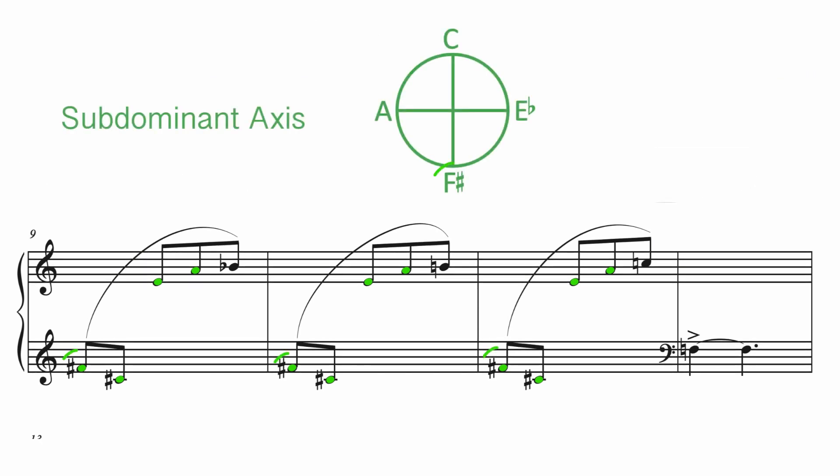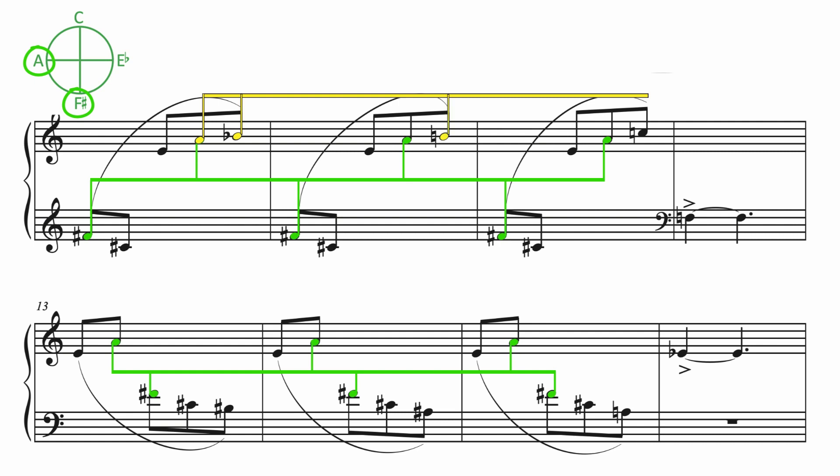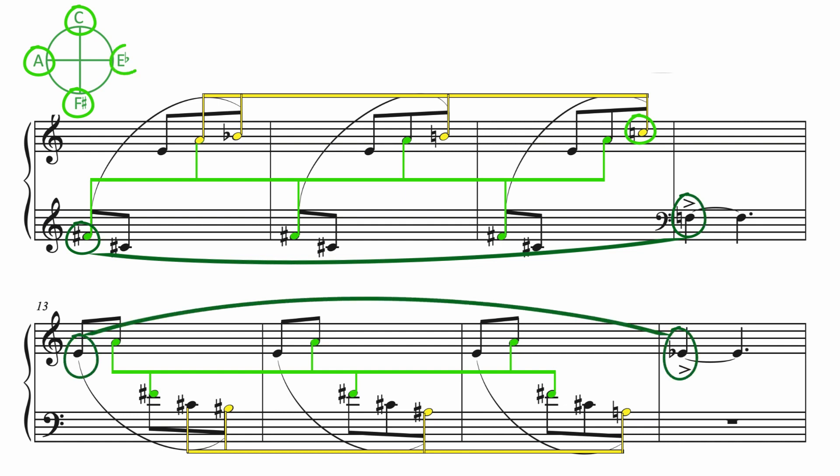In measure 9, we see strong entrances of F sharp and A, both elements of the subdominant axis. F sharp is paired with its fifth related pitch C sharp and A with its fifth related pitch E. And these pitches continue right through measure 15. Now trace the A pitch in the right hand as it ascends chromatically and arrives on the pitch C, the most prominent pitch of the subdominant axis. In the left-hand part at measure 13, this pitch is picked up and harmonically as B sharp and then moves chromatically back down to A by measure 15. Now take a look at the large scale chromatic motion as F sharp in measure 9 moves down to F in measure 12, connecting through E in measure 13, and then arriving on E flat in measure 16. This makes the subdominant axis complete.